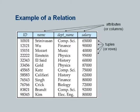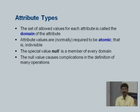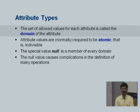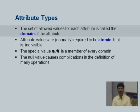What is a relation? We already saw this particular relation before, with its attributes or columns and rows or tuples. This particular one is an instructor relation. I am going to cover a bit of terminology here. The set of values which are allowed for a particular attribute is called the domain of an attribute.